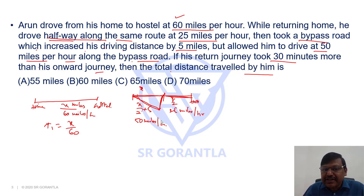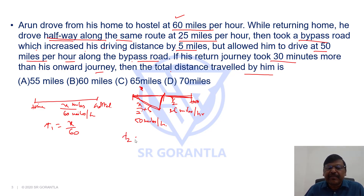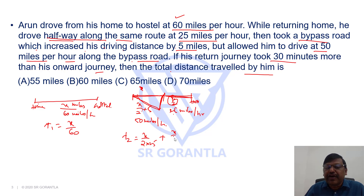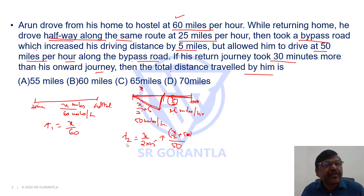Because of this, the return journey time is 30 minutes more than the onward journey. The return journey time has two parts: x by 2 at 25 miles per hour gives x by 2 divided by 25, plus x by 2 plus 5 at 50 miles per hour gives x by 2 plus 5 divided by 50.